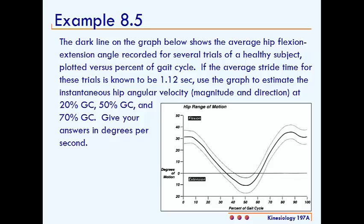Plotted versus percent of gait cycle. If the average stride time for these trials is known to be 1.12 seconds, use the graph to estimate the instantaneous hip angular velocity, magnitude, and direction at 20% GC, 50% GC, and 70% GC. Give your answers in degrees per second.